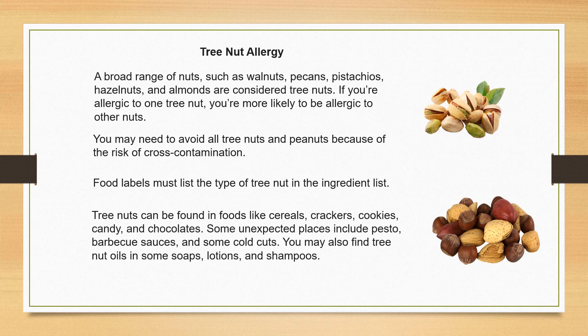Tree nut allergy: there are many types of tree nuts, including walnuts, pecans, and almonds. If you're allergic to one tree nut, you're more likely to be allergic to others. Read labels carefully. Tree nuts can be found in cereals, crackers, cookies, candy, chocolates, pesto, barbecue sauces, and some cold cuts. Many lotions, soaps, and shampoos also contain tree nut oils.